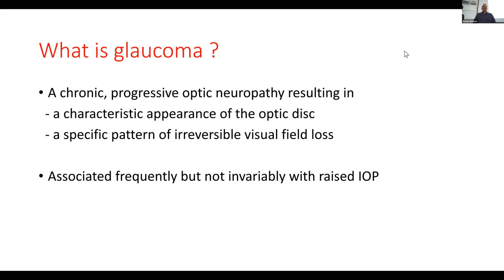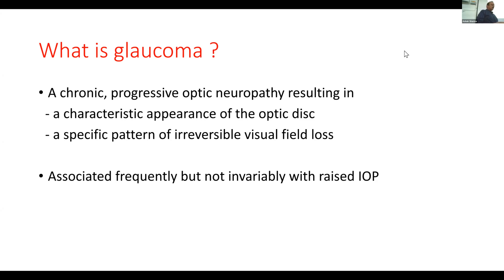We define glaucoma as chronic progressive optic neuropathy with characteristic appearance in the optic disc. There will be change in the cup-disc ratio. It is associated but not always with raised intraocular pressure — intraocular pressure may be normal, which we call normal tension glaucoma. So intraocular pressure is one of the factors and not the only factor for glaucoma.